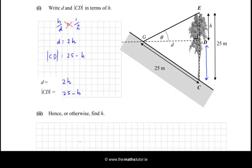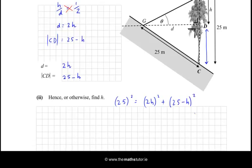Hence, or otherwise, find H. OK, we know that this hypotenuse is 25 metres. We have CD in terms of H, and we have D in terms of H. So, let's form an equation because we have a right angle here, using the three lengths of the triangle. So, we have that 25² = D², which is (2H)², plus CD², which is (25 - H)². And we should be able to solve that for H.